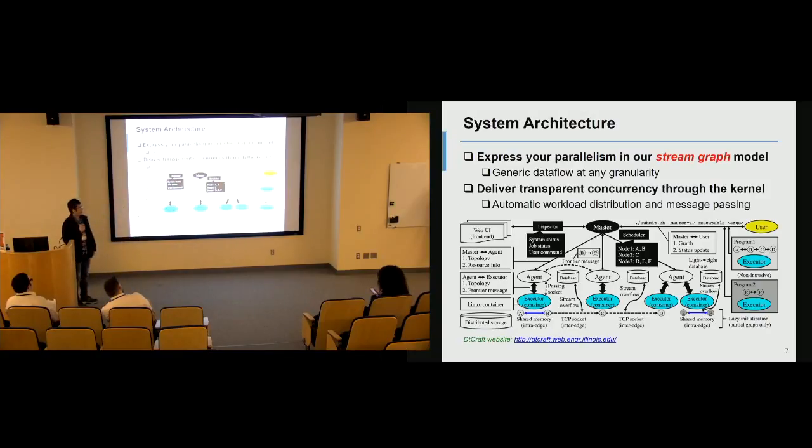In a closer look at the system, generally you express your parallelism in terms of our stream graph programming model, which I'm going to talk about in more detail later. Once you cast your application into this stream graph framework, you can submit it to our system, and you don't have to worry about those details like how to partition your program, how to distribute your workload, or how to do process communication. Our system will automatically do this for you. The only thing you have to do is think about how to cast your application into this stream flow graph.